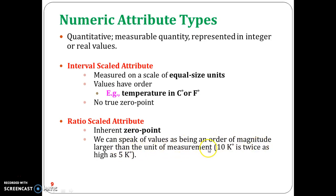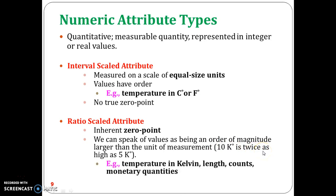In addition, the values are ordered and we can compute the difference between values as well as mean, median, and mode. Consider the example of temperature in Kelvin: 10 Kelvin is twice as high as 5 Kelvin.